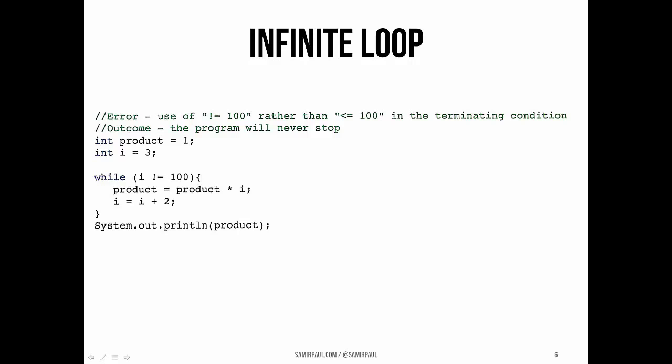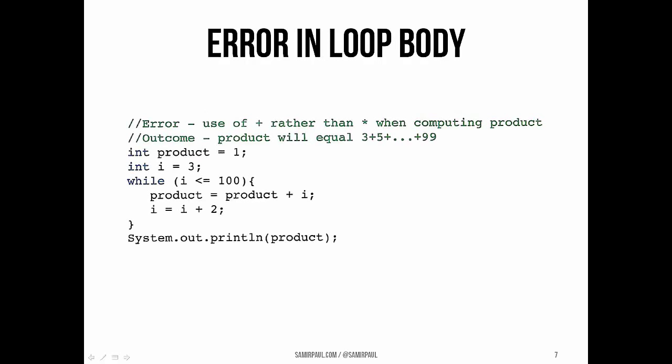Here's another one. This is in the body of the loop, and it's pretty obvious because I'm pointing it out to you, but often errors like this can actually be kind of hard to figure out when you're in the midst of one. Here you can see we're adding rather than multiplying the values. So yeah, that's a problem.